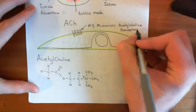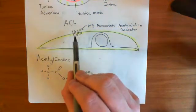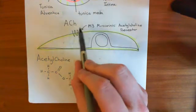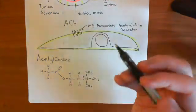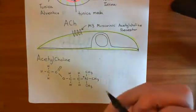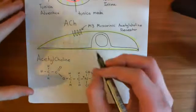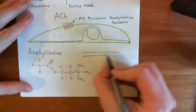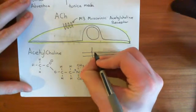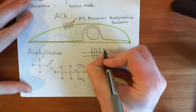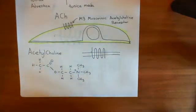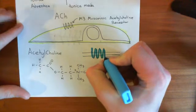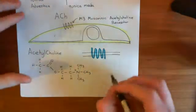Here is the phospholipid bilayer of the endothelial cell, and here is our M3 muscarinic receptor with its seven transmembrane domains, or membrane-spanning alpha helices — I'll color it in blue. And basically, it's coupled with a GQ heterotrimeric G-protein. Let me talk about the structure of heterotrimeric G-proteins.